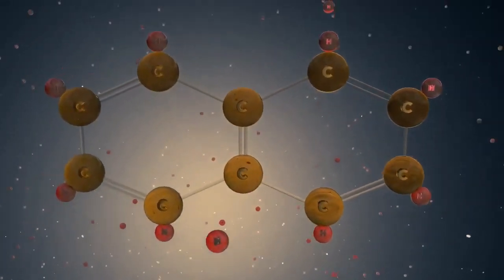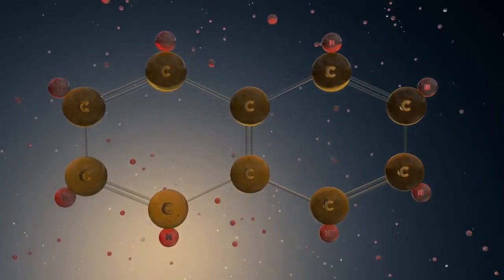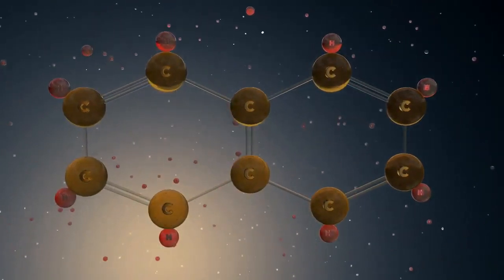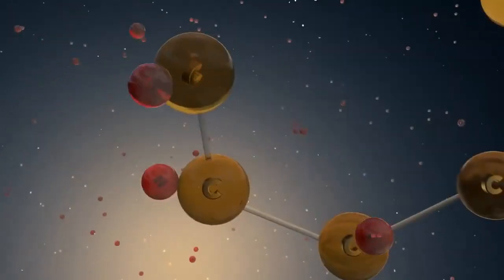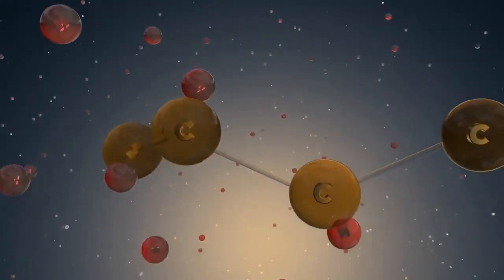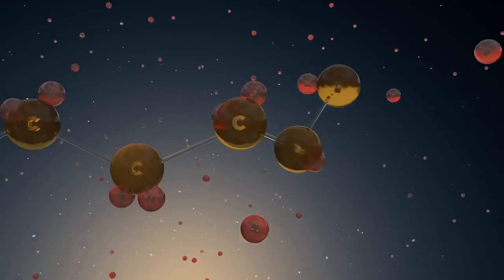The number of carbon atoms in naphtha is about the same as the number found in gasoline. But their structure is more complex. Reforming rearranges the naphtha molecule, turning it into a usable, gasoline-like molecule.